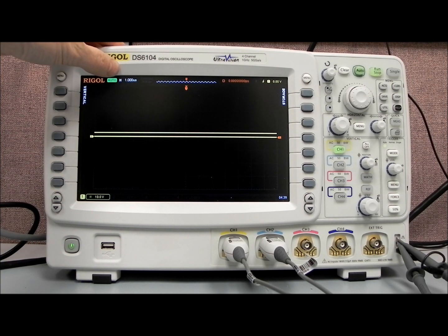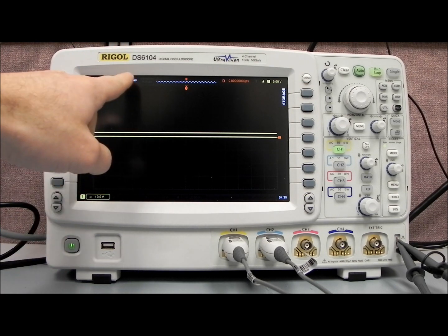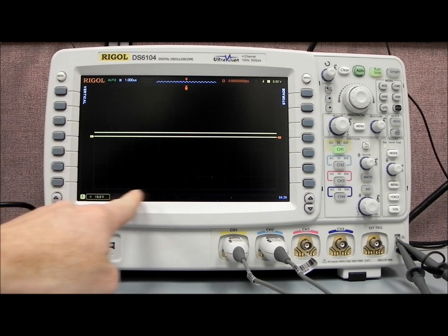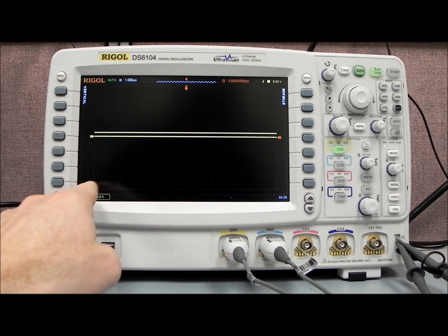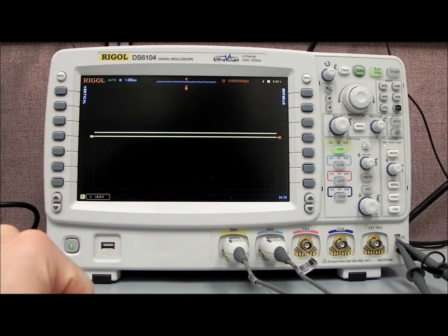We have a small h, which stands for horizontal, and then the number of seconds per division in the horizontal scale. So we have 1 microsecond per division. There are 14 divisions across the display in the horizontal frame, so we have 14 microseconds from left to right on the display.